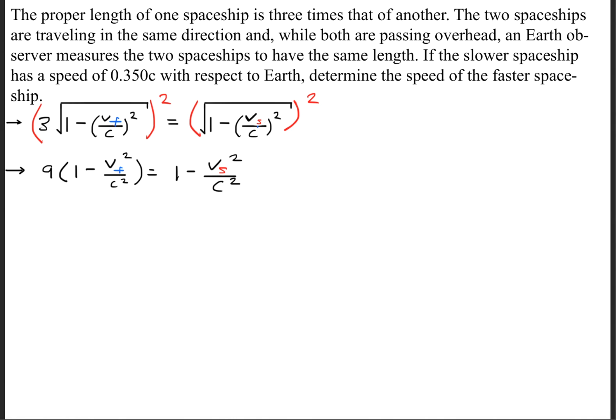The next thing we'll do is we'll need to isolate the V sub F variable because it's asking us to determine the speed of the faster spaceship. In order to do that, we'll go ahead and square both sides so that we get 9 times 1 minus V sub F squared divided by C squared, which is equal to 1 minus V sub S squared divided by C squared.